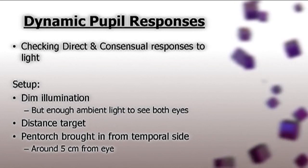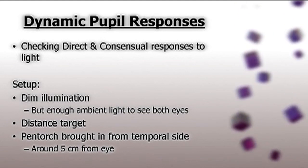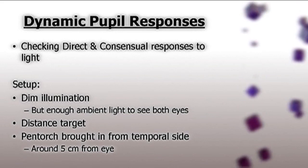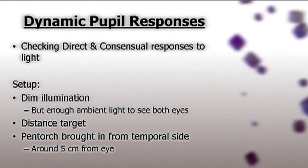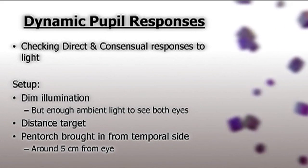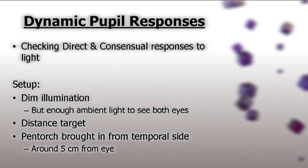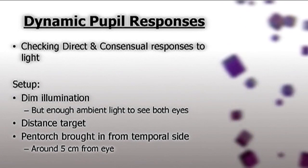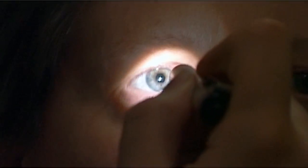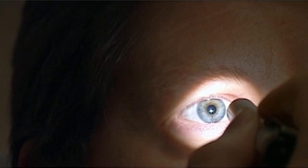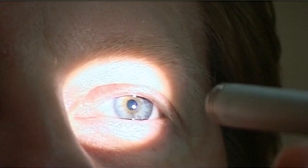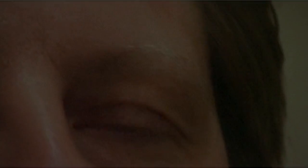To measure the direct response to light, we will bring a pen torch in from the temporal side, have it about five to ten centimetres away from the eye, and shine it into the pupil. To measure the direct response, we will look at the eye which is being illuminated, and as soon as that light arrives, you should see an associated pupil constriction. Upon removal of the light, you should see the pupil dilate. This process can be repeated two to three times, as abnormalities will possibly show once it has been repeated.